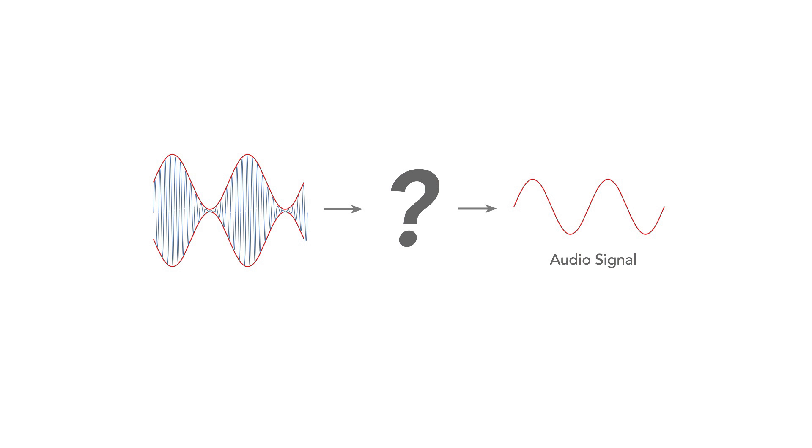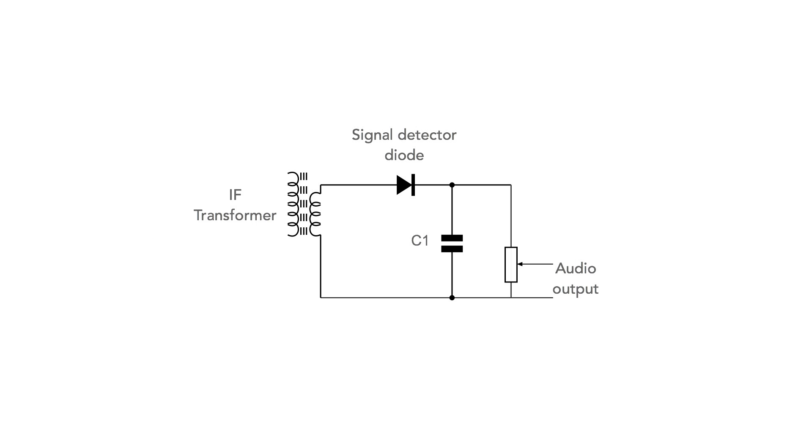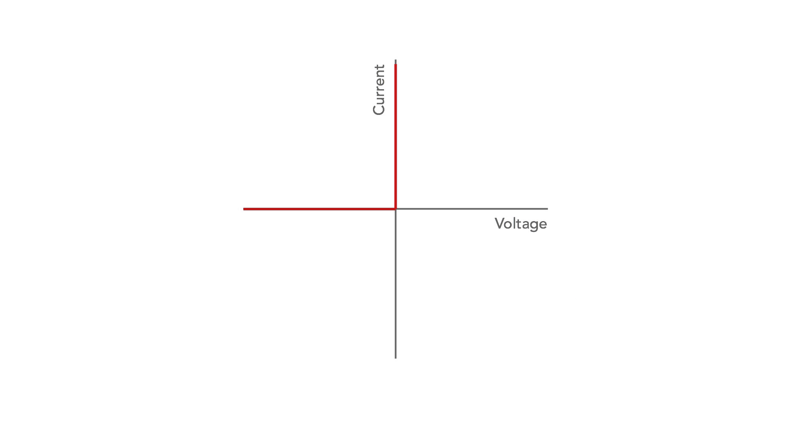At the receiver end, the next issue is to recover the audio from the overall signal. How do we do this? It's often done using a simple diode detector. With an ideal diode characteristic, no current flows in the reverse direction and there's no resistance in the forward direction.